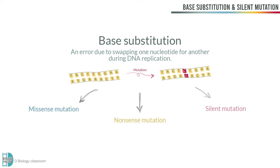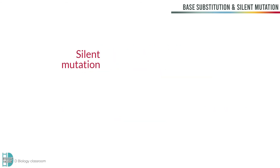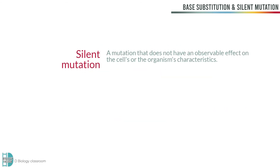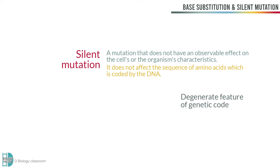However, base substitution may also lead to silent mutation. Silent mutations are mutations that do not have an observable effect on the cells or the organism's characteristics. It does not affect the sequence of amino acids which is coded by the DNA. So how can this happen? This is due to the degenerate feature of the genetic code, which means that there are more than one DNA triplet that can code for the same amino acid.